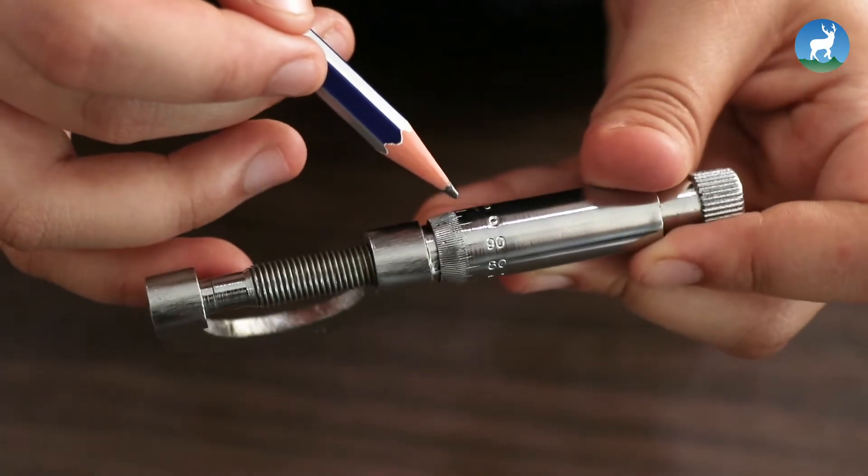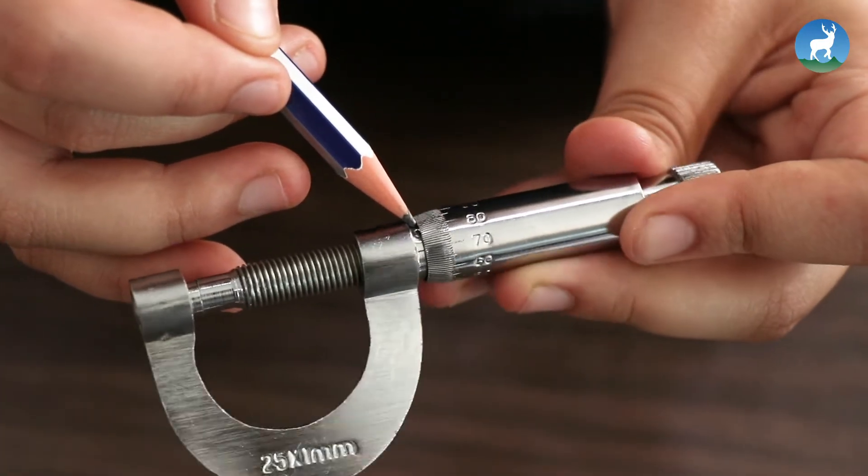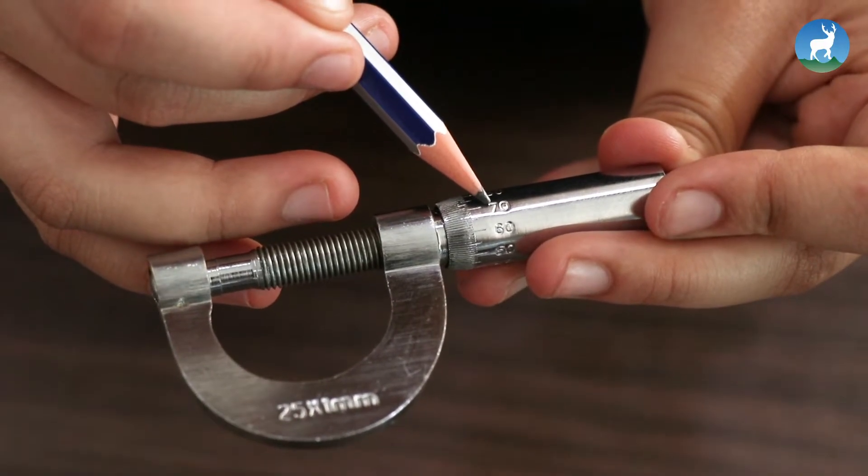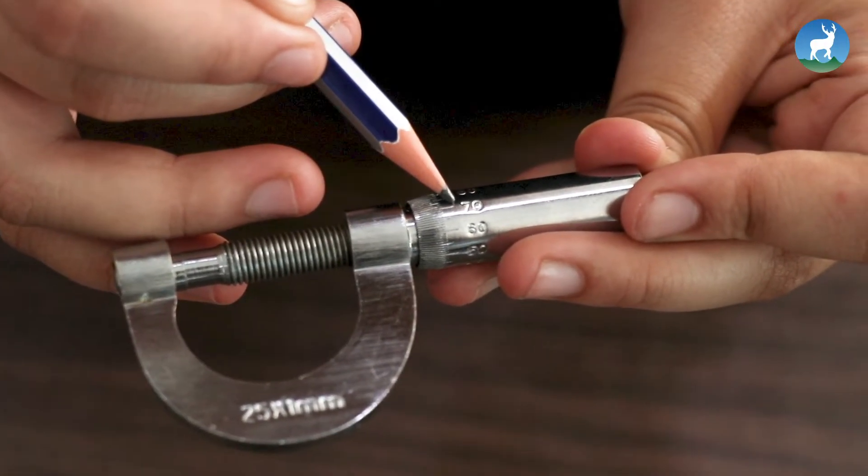In the given screw gauge, the 0 of circular scale lies above the reference line of mean scale. So, we have negative zero error. The reading is calculated to be 70.